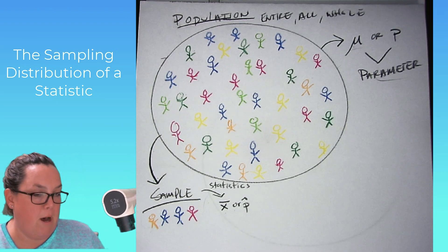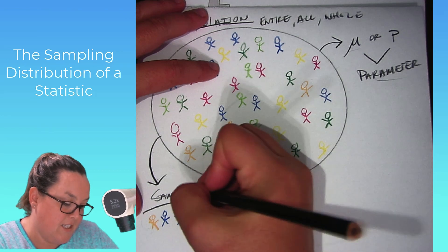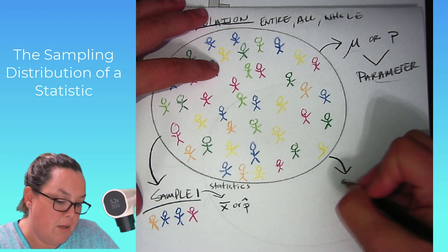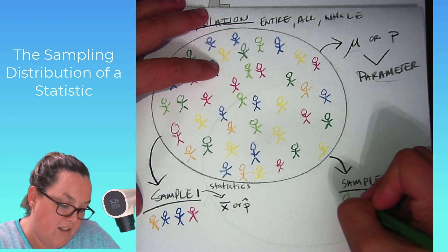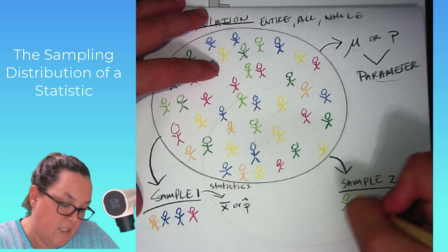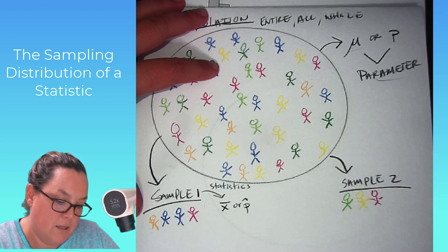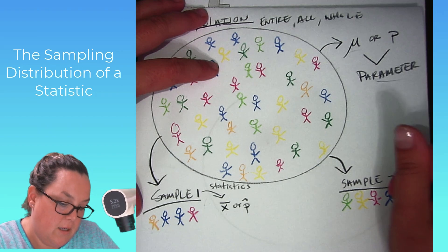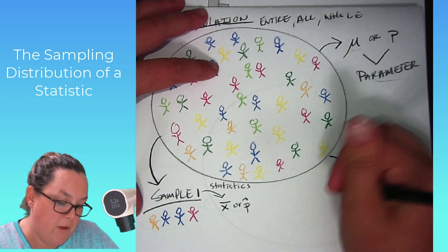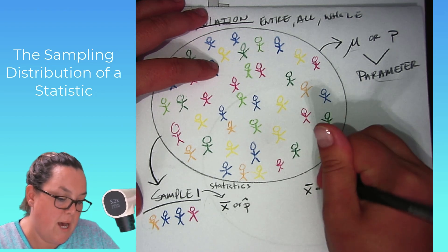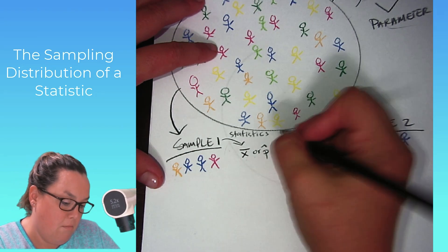Parameters are called parameters because they refer to the population. Now, every time you take a new sample — let's say this is sample one — you take another sample and you get sample two with a different group of people. Because they're a different group, they would probably have their own x-bar and p-hat values — a different average height and a different proportion of people with brown eyes.